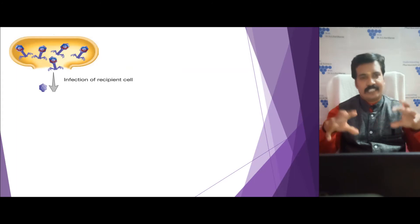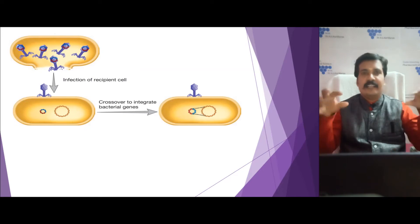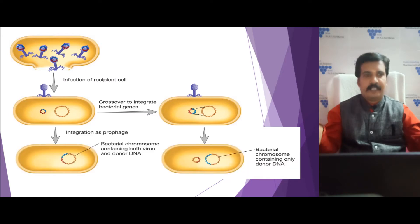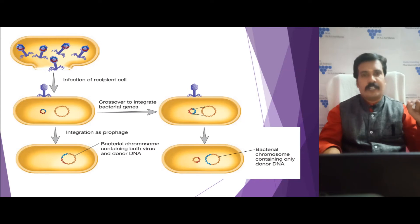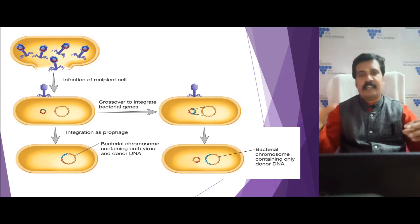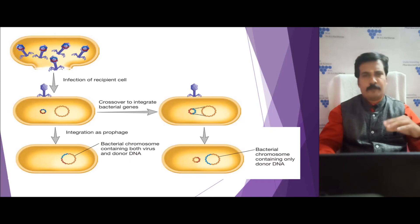The specialized transducing phage particle goes to the next recipient cell. The particle is released, and after release, it undergoes immediate crossover integration, inserting the bacterial DNA into the new host's chromosome.